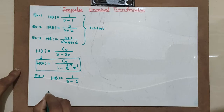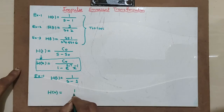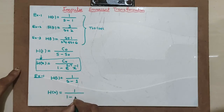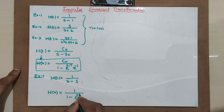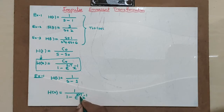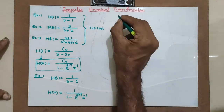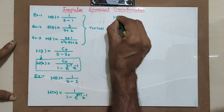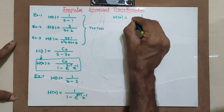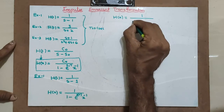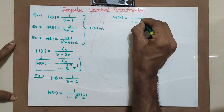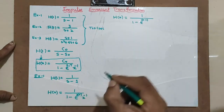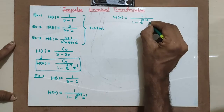How do I transform this into H(z) using impulse invariant transformation? Very simple. H(z) is equal to c₀ — that is 1 — divided by 1 minus e raised to s₀T times z raised to minus 1. Here s₀ is 1, so it becomes e raised to 1 times T, and T is 0.1 second, giving e raised to 0.1 times z raised to minus 1.